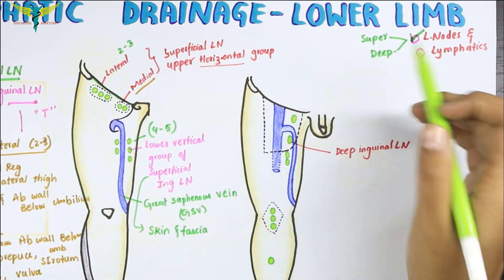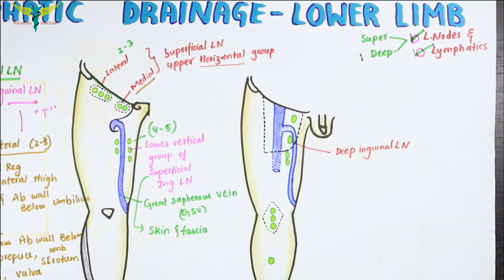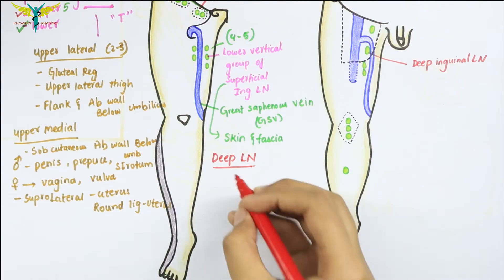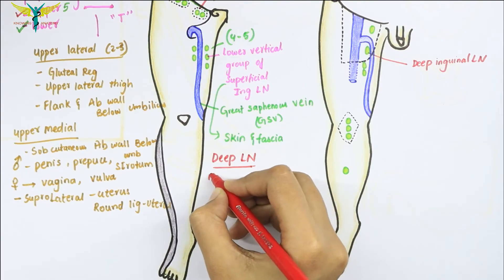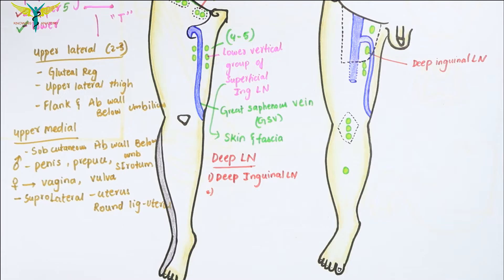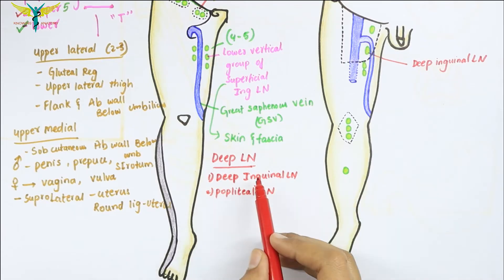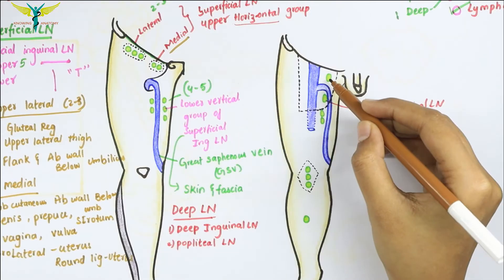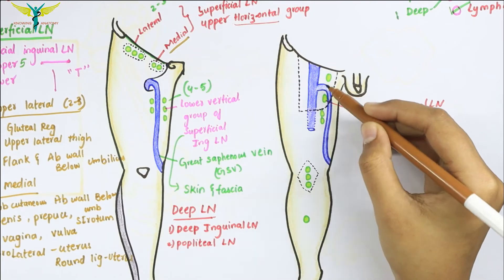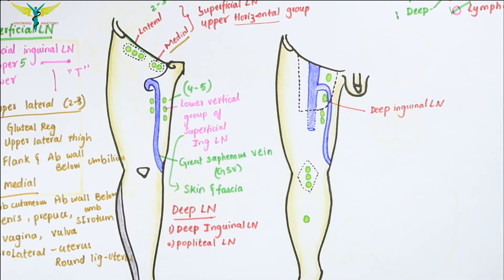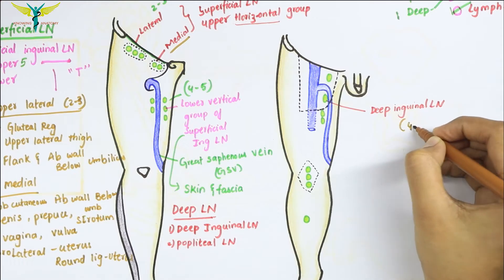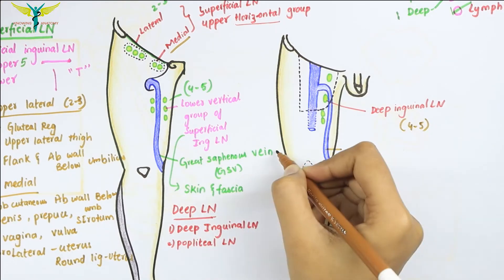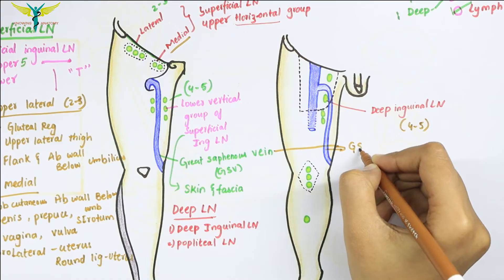Now let's talk about the deep groups of lymph nodes. The deep lymph nodes of the lower limb are the deep inguinal lymph nodes and the popliteal lymph nodes. In this diagram, these lymph nodes are called the deep inguinal lymph nodes, which are 4 to 5 in number. And this vein is the great saphenous vein.